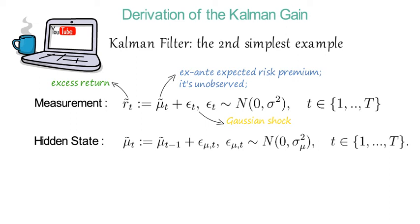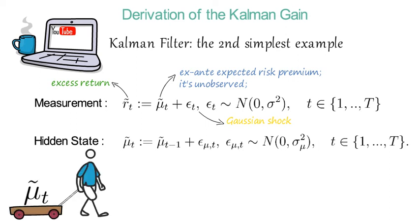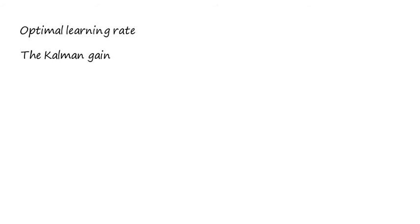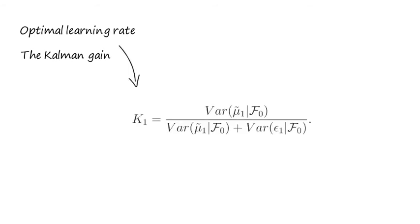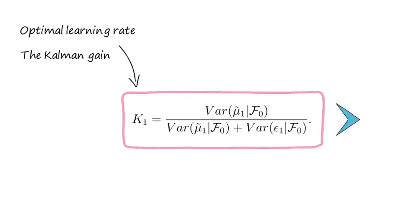Epsilon_mu_t is a Gaussian random variable with mean zero and sigma squared mu as the variance. If you look at the state equation, you could also say that the ex-ante expected risk premium follows a random walk — tomorrow's value is just a random perturbation of today's value. What we want to show is that the optimal learning rate, or Kalman gain, as of period one is nothing else than the following ratio.